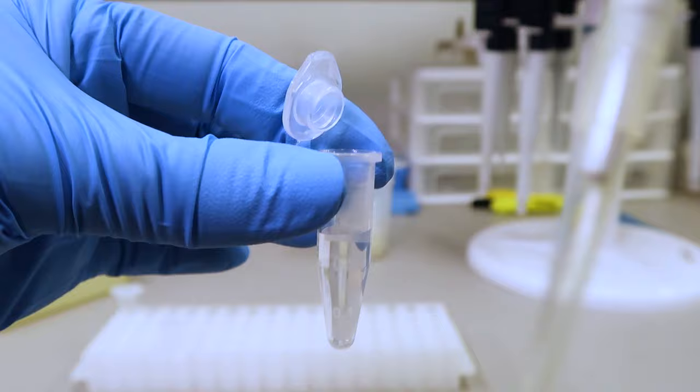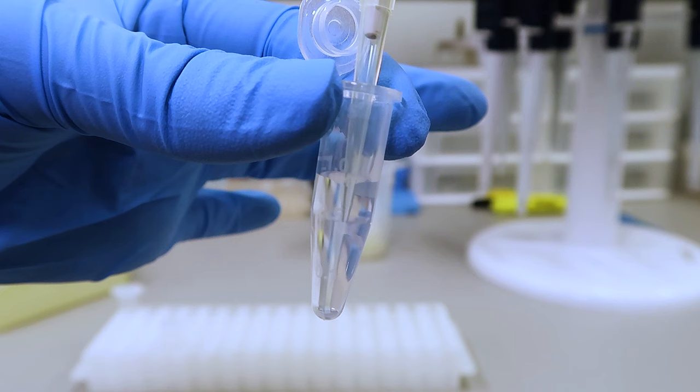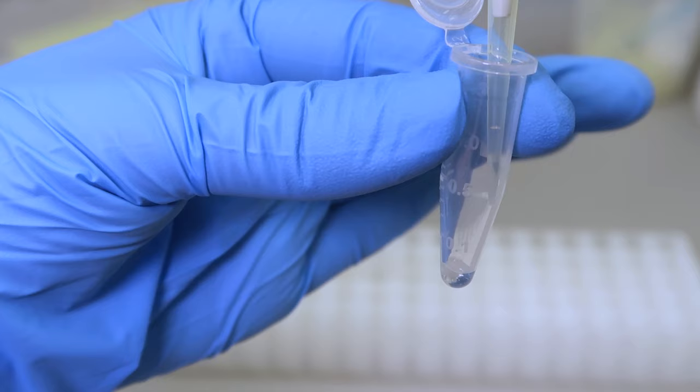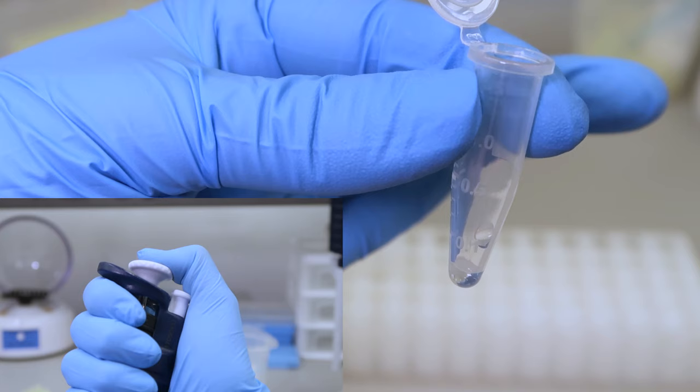To draw liquid into the pipet, push the plunger down to the first stop. Then, place the pipet tip into the liquid and release the plunger slowly. This will draw the correct volume of liquid into your tip. To dispense into a new tube, touch the pipet tip to the bottom or side wall of the tube and push the plunger down past the first stop until you feel the second stop. Pull your pipet tip away before releasing the plunger to ensure that the liquid is not drawn back up into the pipet.